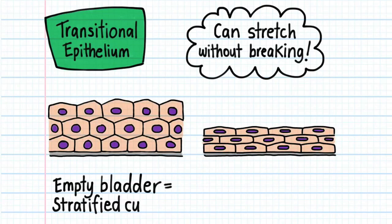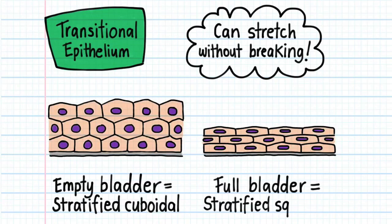In an empty bladder, the cells are cuboidal in shape, but as the bladder fills with urine, the epithelial cells stretch and become squamous in shape. It's because the cells change shape that we call this epithelium transitional.